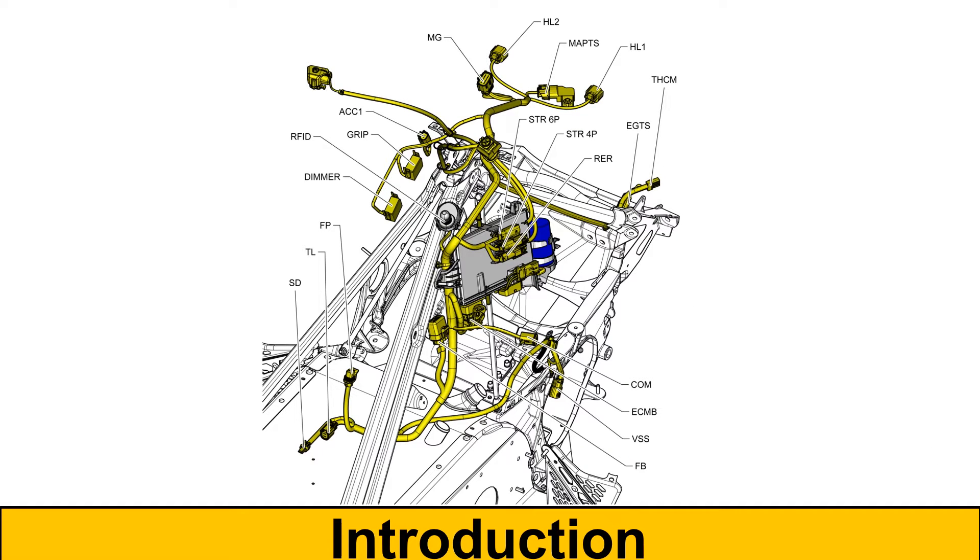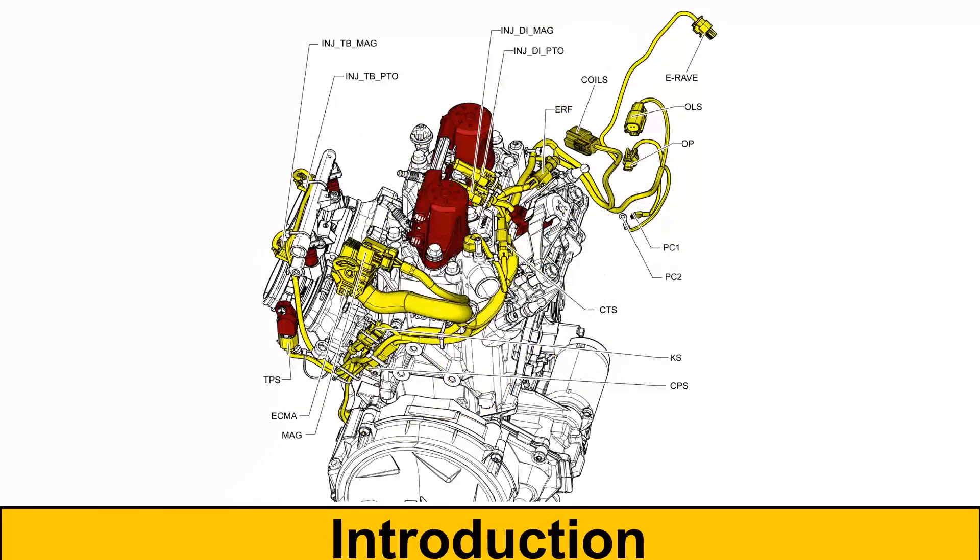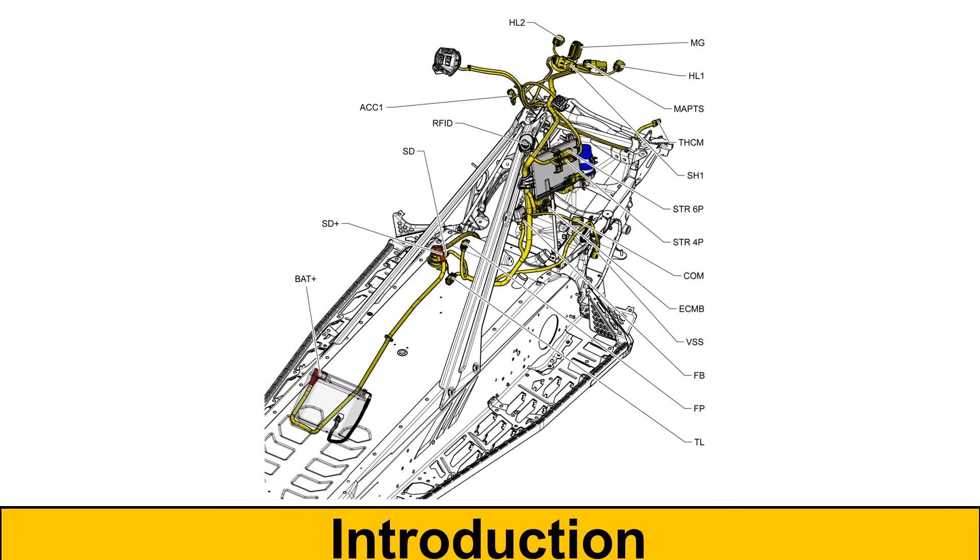The eTEC electrical system is unique in that it produces the high voltage necessary for the eTEC injectors and other high voltage components at low rpms and without the need for a battery. However, some models come with a battery. Adding a battery has very little influence on how the electrical system actually operates.